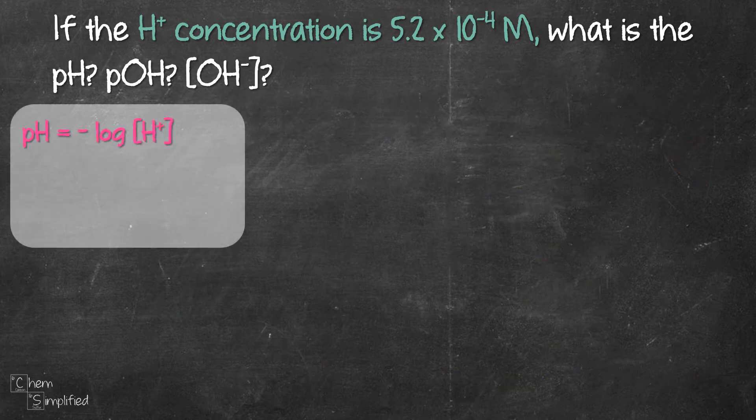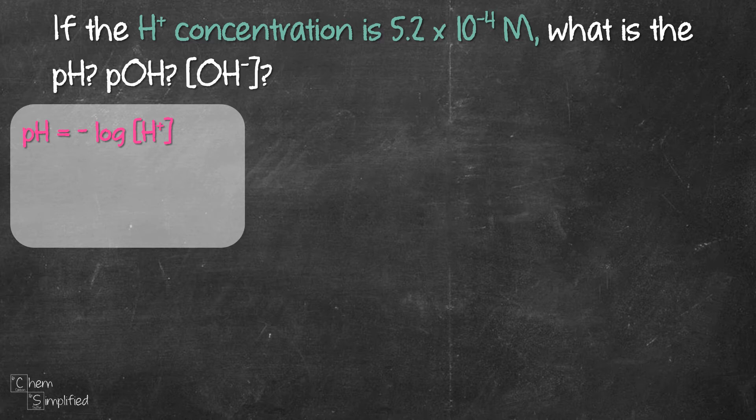The first formula is pH equals negative log of H+. We plug in the value of H+, punch in the calculator, negative log of 5.2 times 10 to the negative 4, and we get 3.28 for pH.